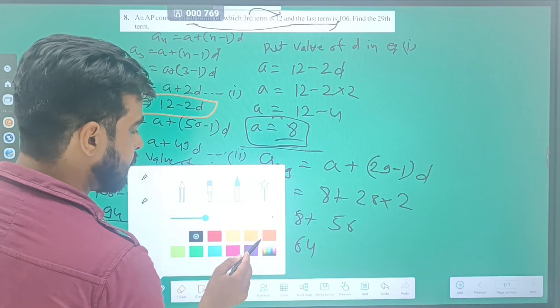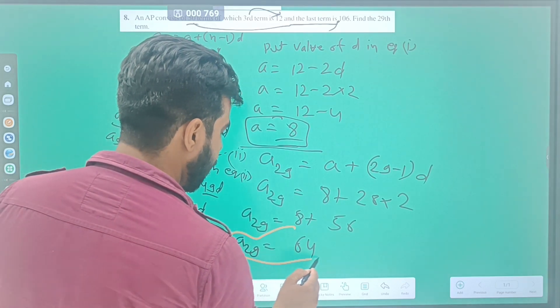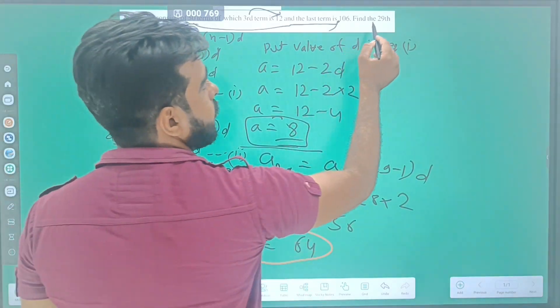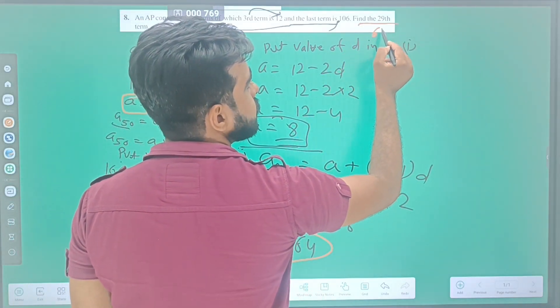What is our answer? Our answer is 64. a_29 = 64.